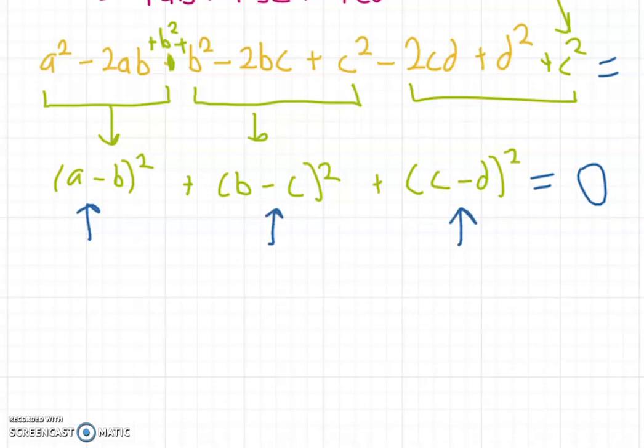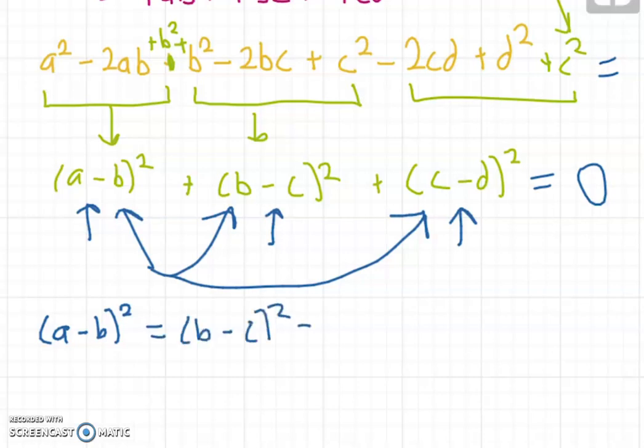However, we can recall that if we square a real number, it's always non-negative and so it's at least 0. So we're adding 3 numbers that are non-negative. And the only way for the sum of 3 non-negative numbers to be 0 is if all 3 of them are 0. So it means we need all 3 of these numbers to all be equal to 0.